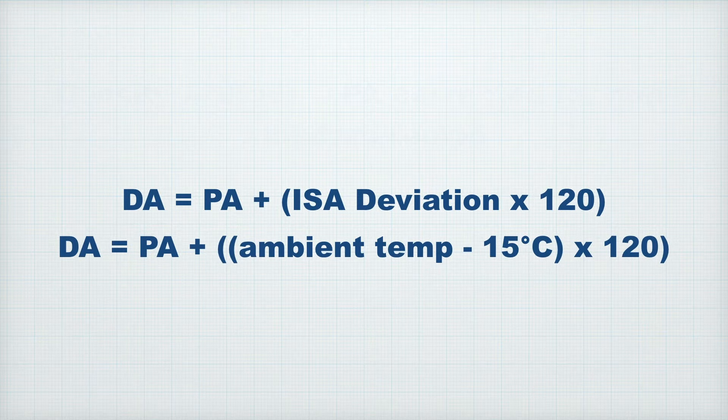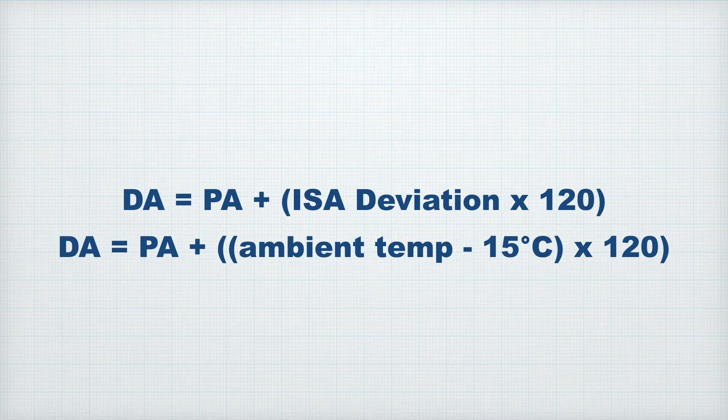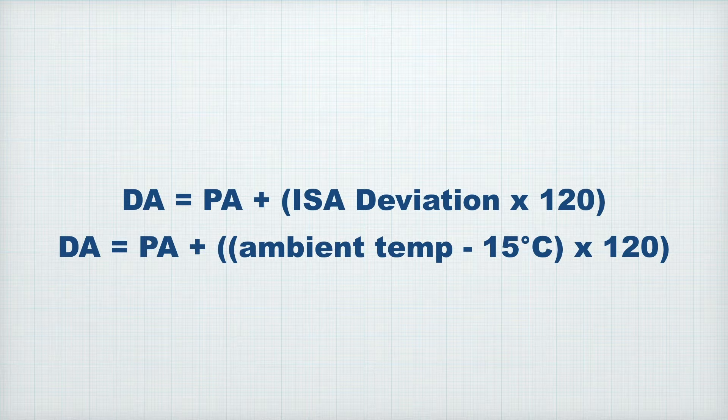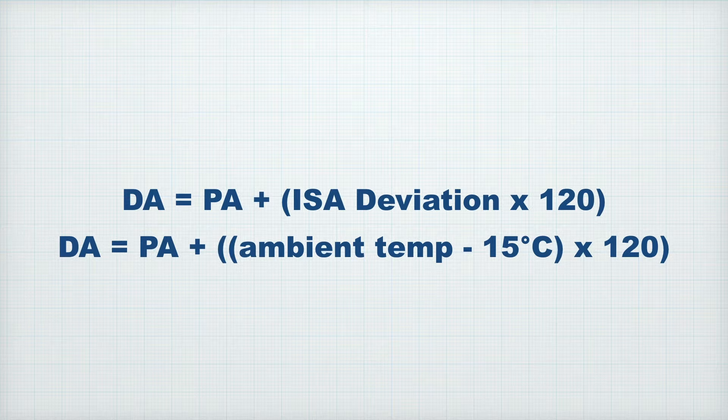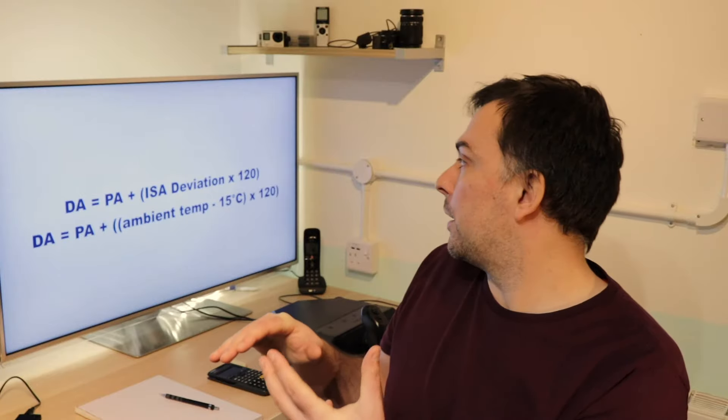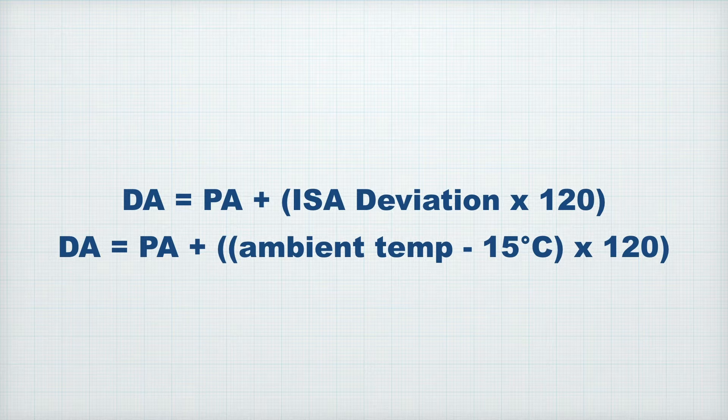Back to density altitude. The formula for density altitude is pressure altitude plus the ISA deviation times 120. There's a second formula which works if you are at ground level, at an airfield, and that formula is density altitude equals pressure altitude plus (ambient temperature minus 15) times 120.